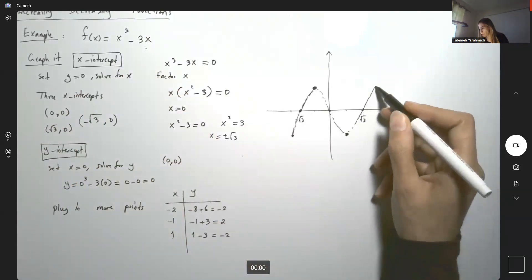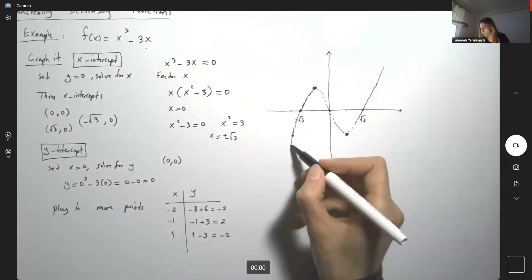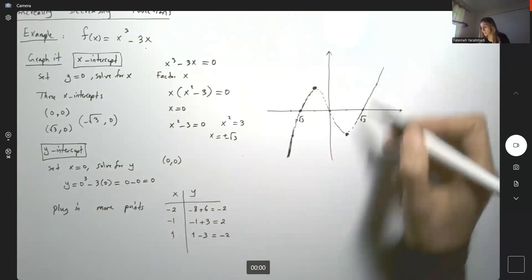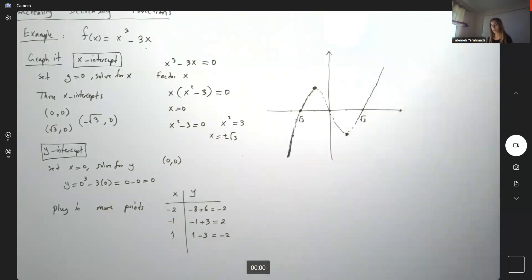You can continue plugging in more values. The behavior is like this. So what's the meaning of that?